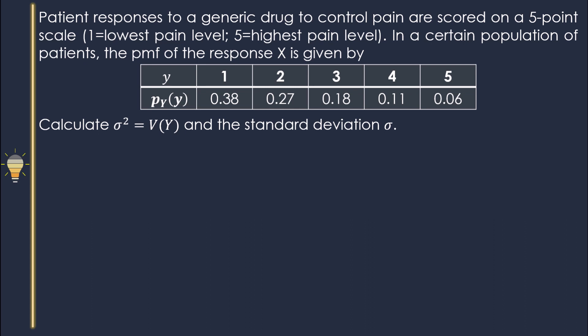So what is the definition of the variance? This is the definition of the variance of the discrete random variable. Here we see we need the mu. Mu is the expected value of Y. In my previous video, I discussed how to find the mu of this problem, so that was 2.2.